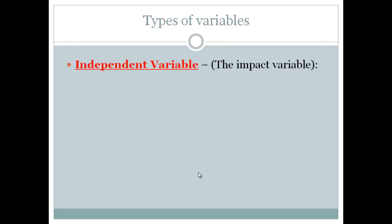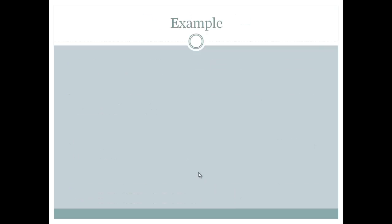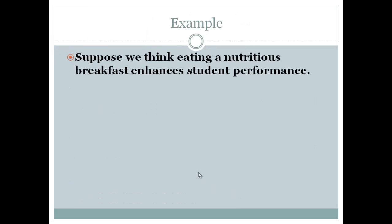So an independent variable, this is the impact variable. This is the factor that we think is going to make an effect on something. It's going to change something else. We're going to measure its effect on something. We think this is going to have an effect on something. Like study techniques will have an effect on test scores. The independent variable there would be study techniques.